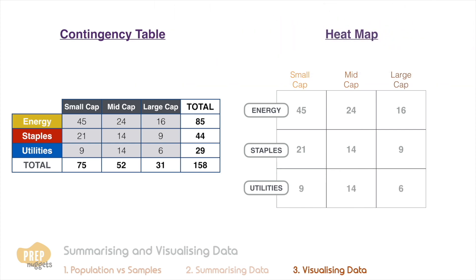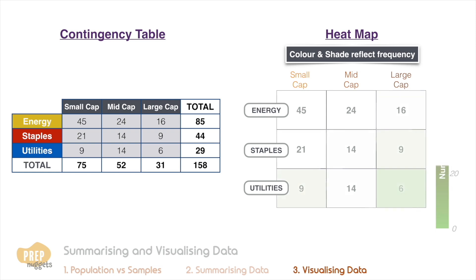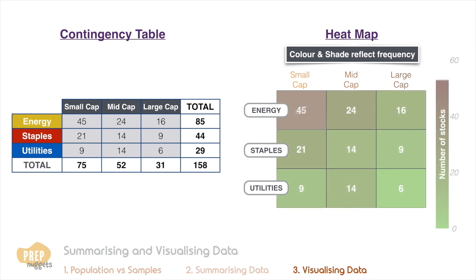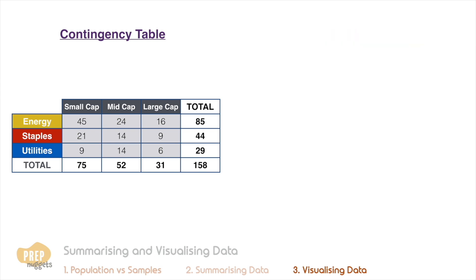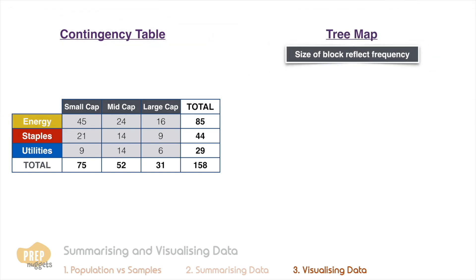One way to visualize a contingency table is to use a heat map, where color and shade are used to reflect frequency. For example, light green could reflect zero, and a deepening shade to dark red will reflect higher frequencies. The heat map for our example will look like this.